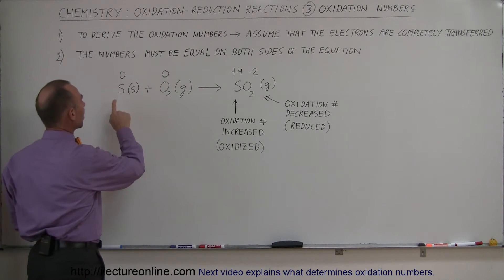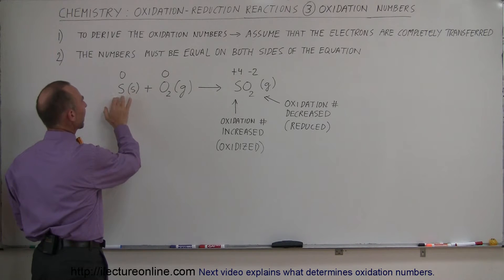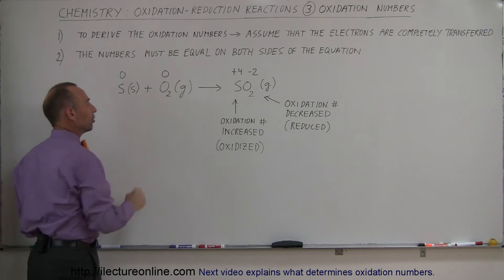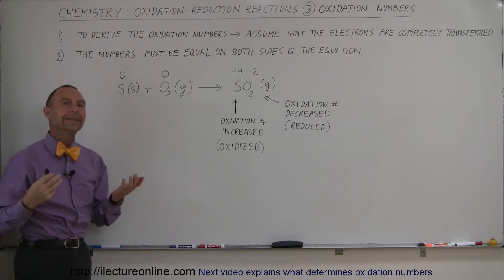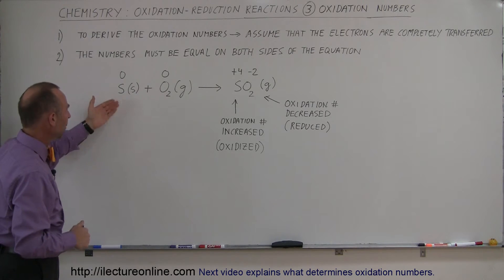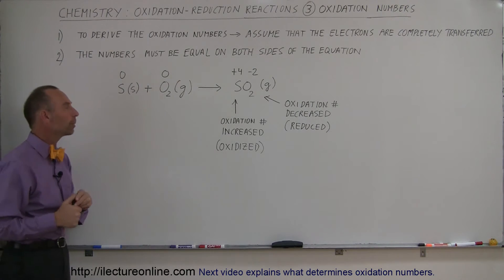We can label the oxidation numbers of the two reactants before they react. You can see sulfur has oxidation number zero, and oxygen has oxidation number zero. They're in their natural status - we find oxygen molecules in the atmosphere and solid sulfur all over the place.